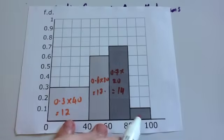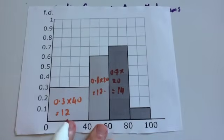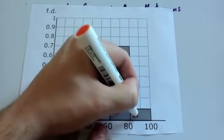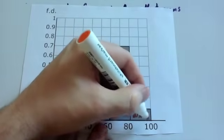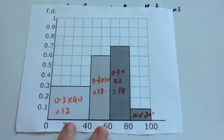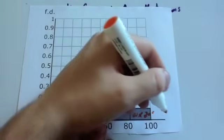And finally, the last one has 0.1 is the frequency density, so 0.1 times, and the class width is 20. 0.1 times 20 is 2.